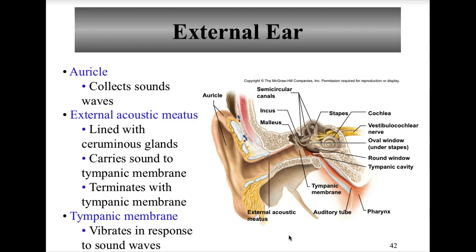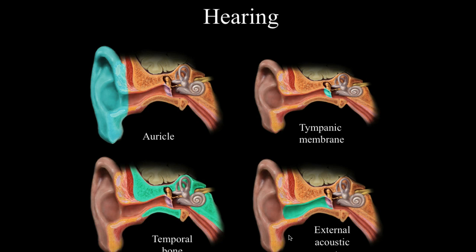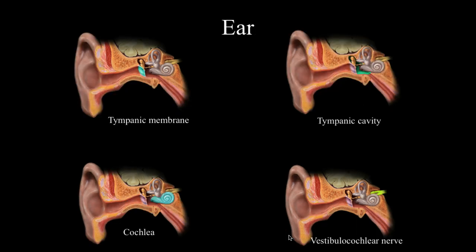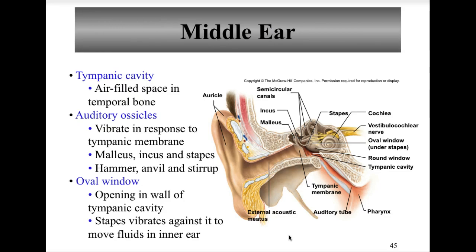The tympanic membrane marks the start of the middle ear, and its function is to amplify and concentrate sound waves. It vibrates in response to sound waves and is also known as the eardrum. The tympanic attenuation reflex is a protective mechanism: loud noises cause two muscles associated with the tympanic membrane to contract, decreasing the amplification effect of the ossicles.